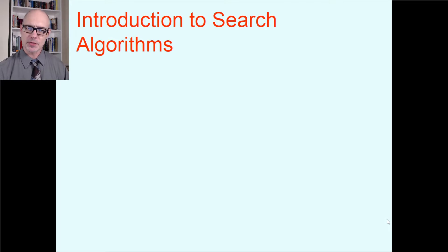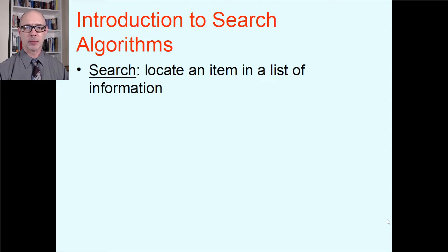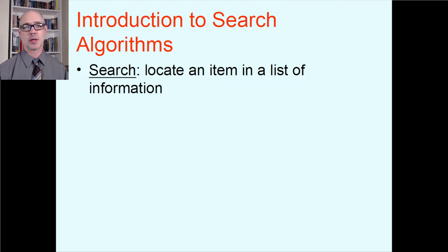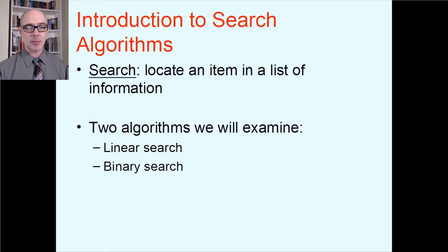In this video and the next we are specifically talking about search algorithms — locating a particular item of interest in a list of information. When we say list, for our examples we're talking about arrays, the most basic way to store a lot of data. Later in the course we'll look at more advanced data structures, but for now: how do you find one specific thing in a big array? Two algorithms cover this video and the next — linear search this time, and binary search next time.